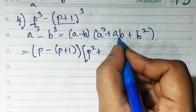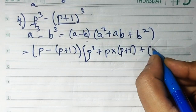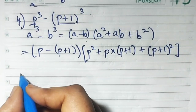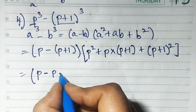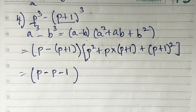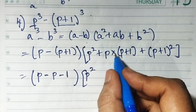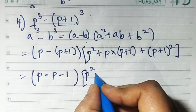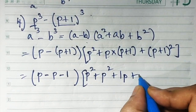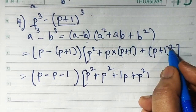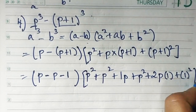The second bracket: a square means p square, plus a into b means p times (p + 1), plus b square means (p + 1) the whole square. Opening the first bracket, p minus (p + 1) gives minus 1 since p and minus p cancel. For (p + 1)² we use a plus b whole square: a square plus 2ab plus b square giving p square plus 2p plus 1.